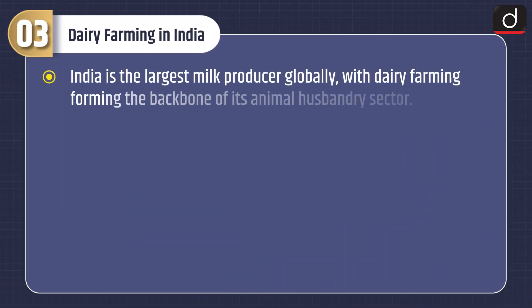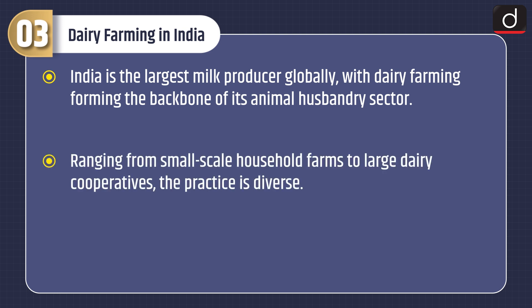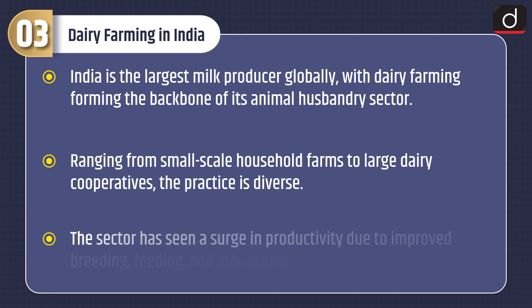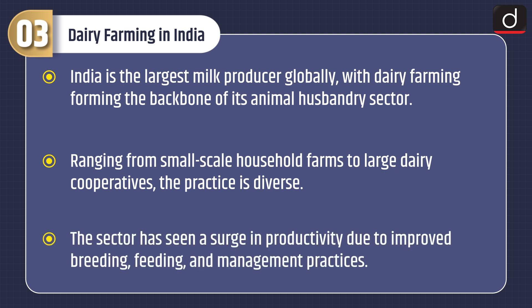India is the largest milk producer globally, with dairy farming forming the backbone of its animal husbandry sector. Ranging from small-scale household farms to large dairy cooperatives, the practice is diverse. The sector has seen a surge in productivity due to improved breeding, feeding, and management practices.